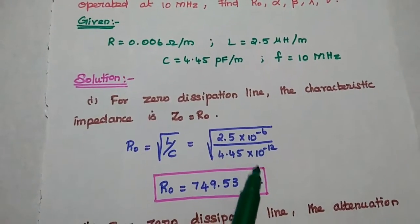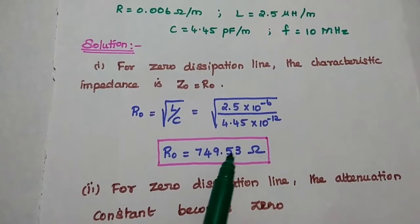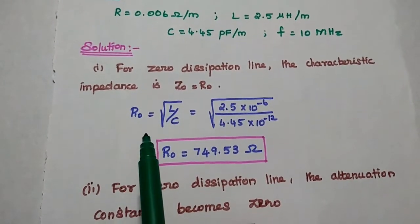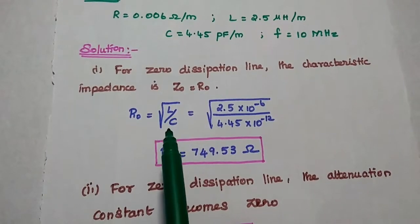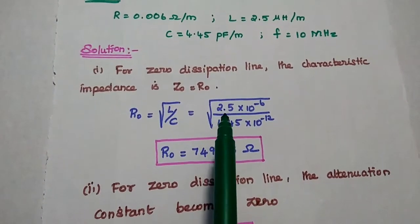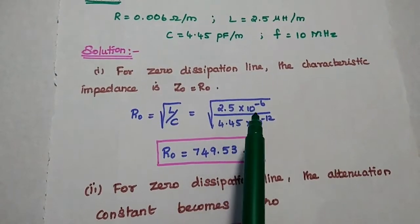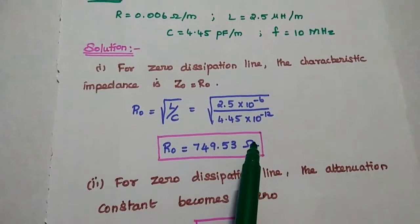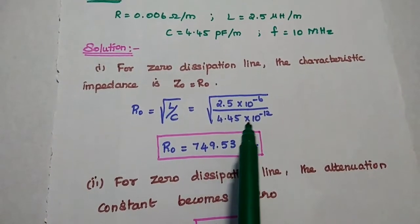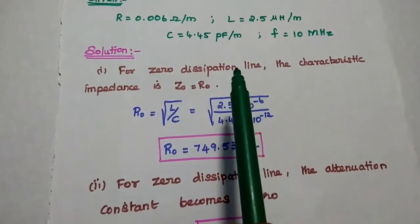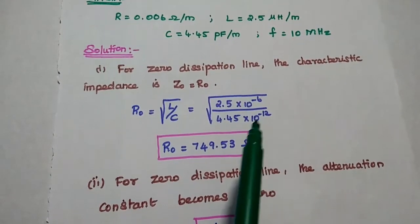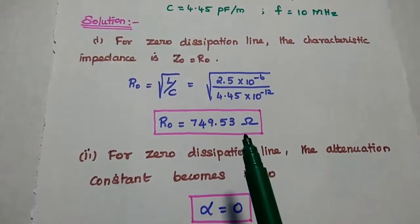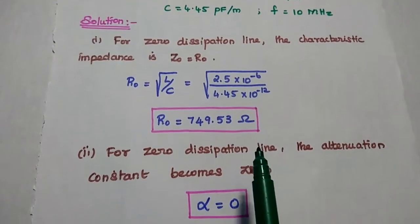First, we find the characteristic impedance for the dissipationless line. Dissipationless means zero dissipation. The formula is R0 equal to the square root of L by C. Substituting the values: L is 2.5 into 10 to the power minus 6, and capacitance is 4.45 into 10 to the power minus 12 — picofarad means 10 to the power minus 12. We get the answer as 749.530 ohms. This is the characteristic impedance for the given data.